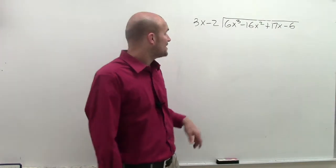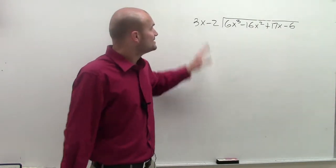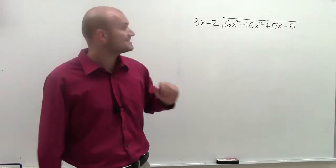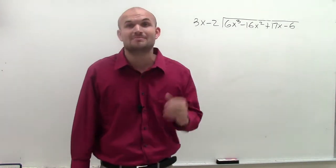I got to brush that off. So what I have here is 3x minus 2 divides into 6x cubed minus 16x squared plus 17x minus 6.